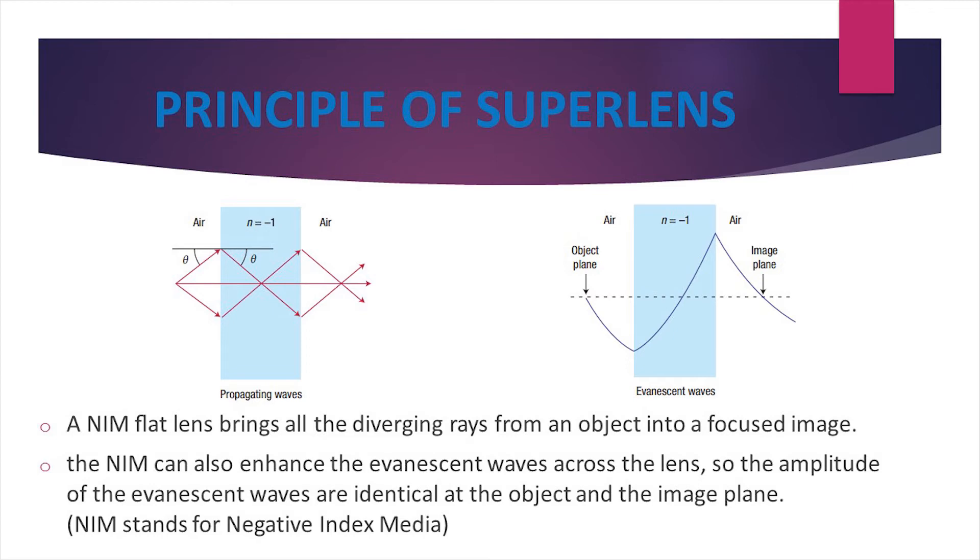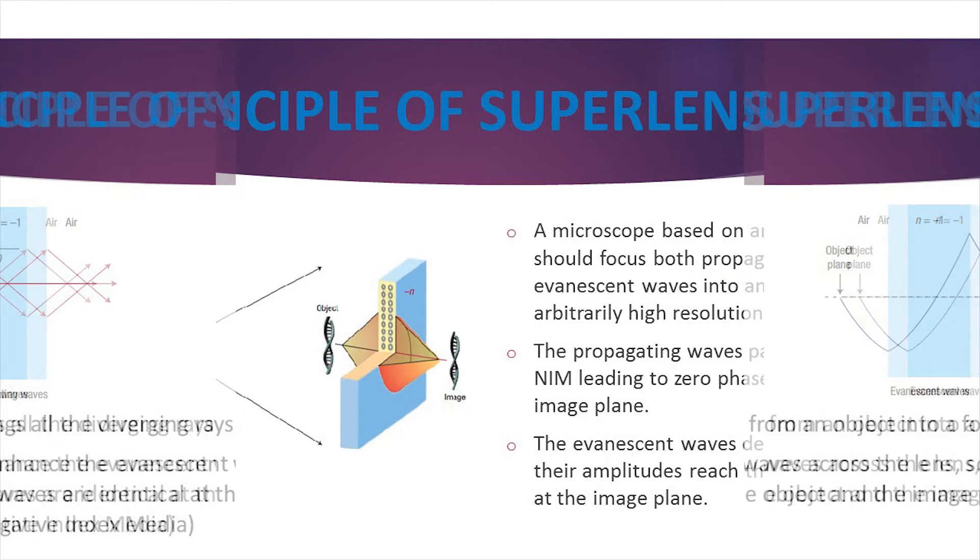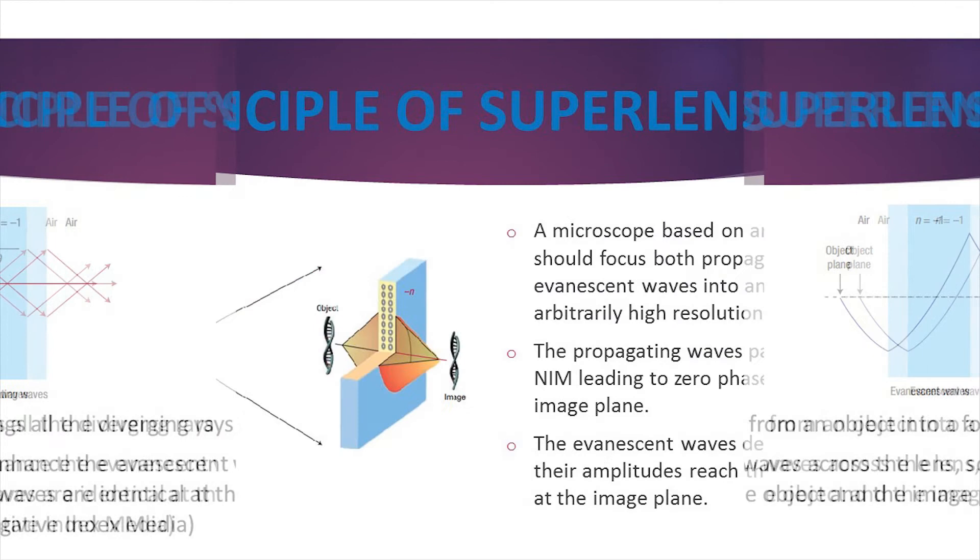But if a lens made of a NIM is placed close to an object, the near-field evanescent waves can be strongly enhanced across the lens. After emerging from a NIM lens, the evanescent waves decay again until their amplitudes reach their original level at the image plane. On the other hand, the propagating waves pass through the NIM lens with both negative refraction and a reversed phase front, leading to zero phase change at the image plane. By completely recovering both propagating and evanescent waves in phase and amplitude, a perfect image is created.